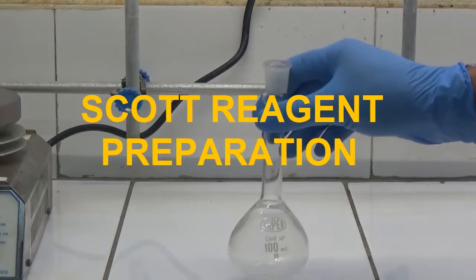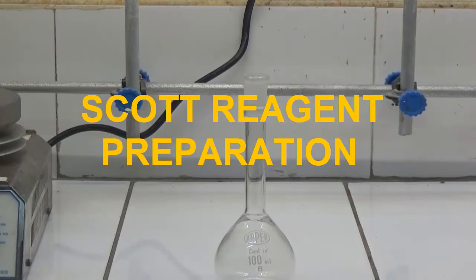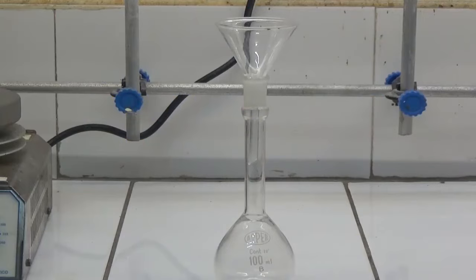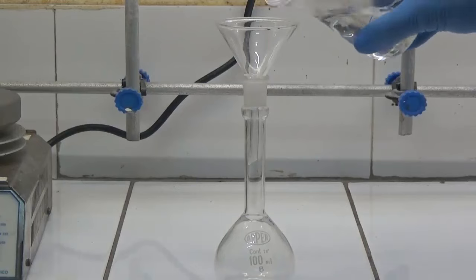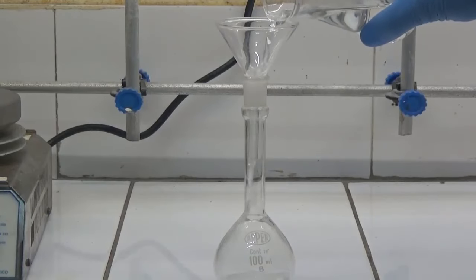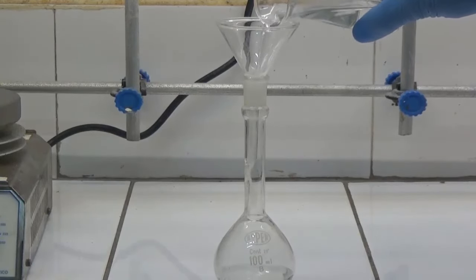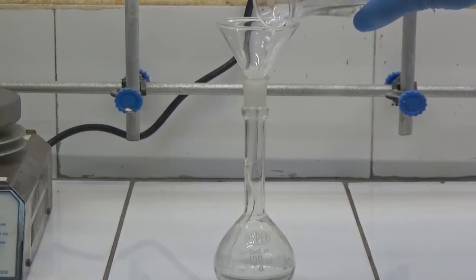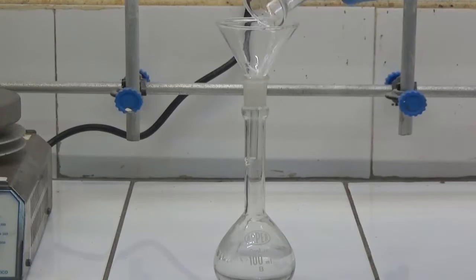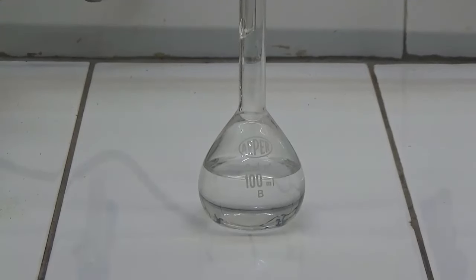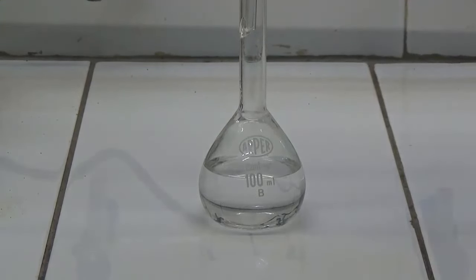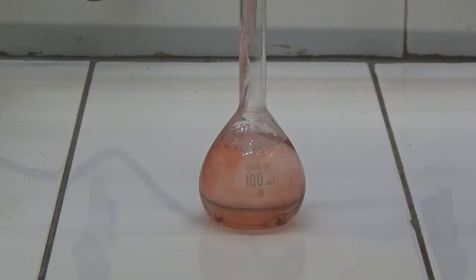Preparing the Scott reagent. In a 100 milliliter volumetric flask, add a solution of 6 milliliters of concentrated hydrochloric acid in 60 milliliters of water. Add up to 100 milliliters of cobalt thiocyanate solution and stir to homogenize.